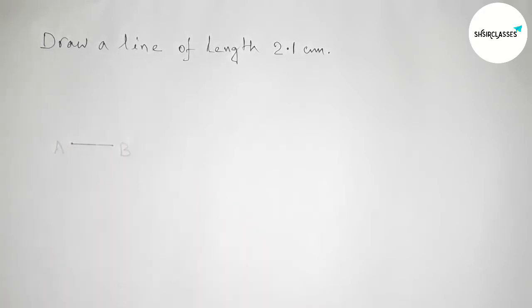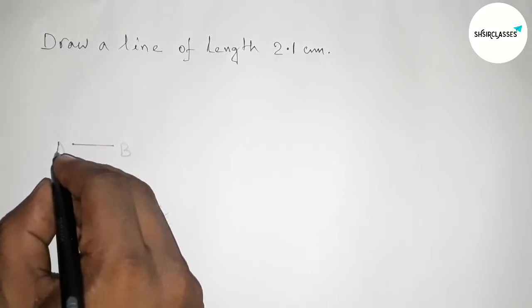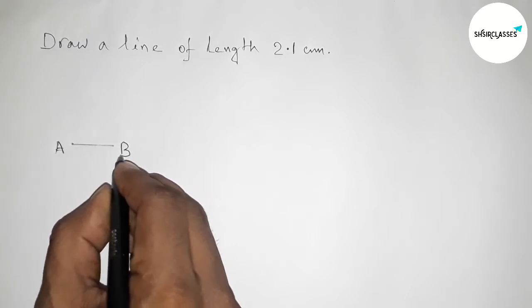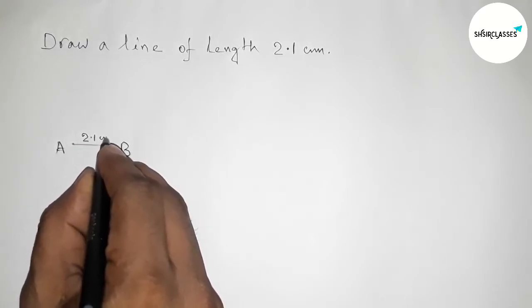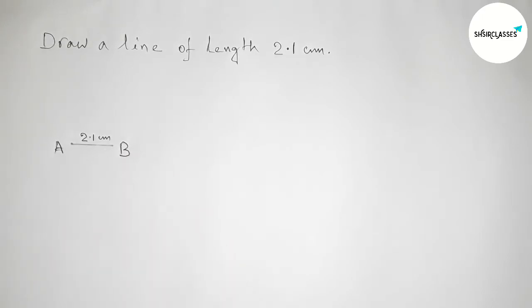Taking here point A and here B. So AB equals to 2.1 centimeter. Therefore the length AB...